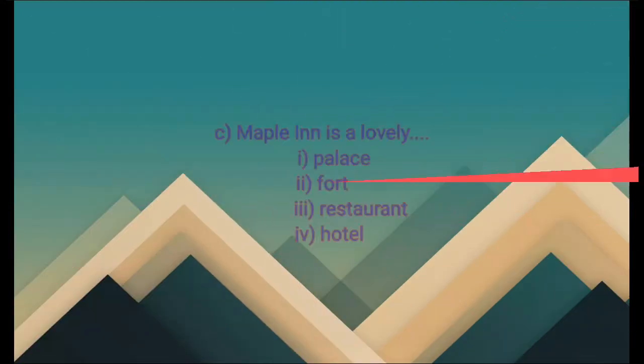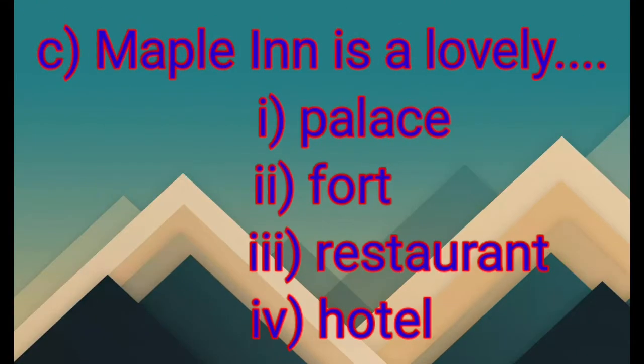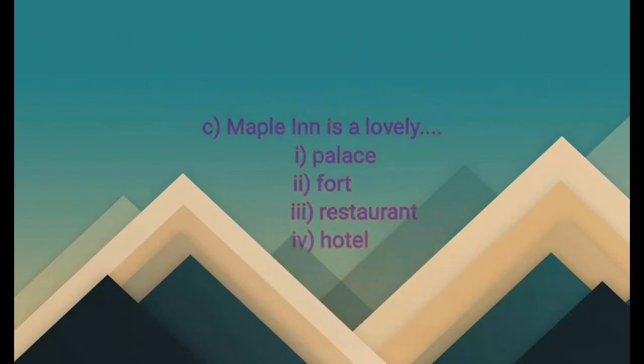Number C: Maple Inn is a lovely — number one: palace, number two: port, number three: restaurant, number four: hotel. The correct option is number four: hotel.